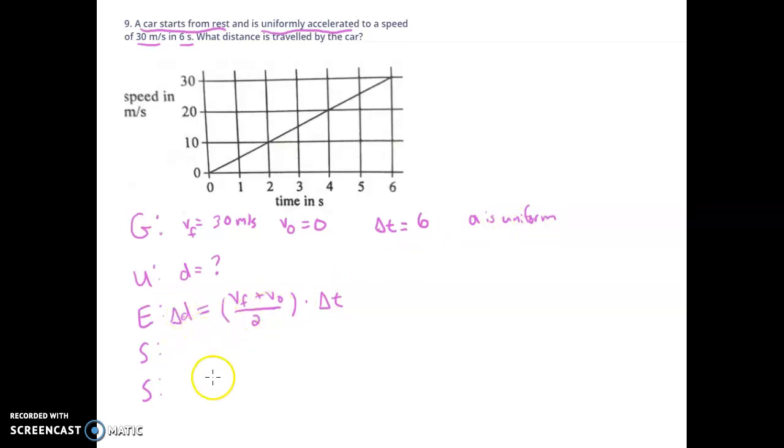And so when we substitute in, we're looking for D here, we plug this in, 30 plus 0 divided by 2 times 6. I'm realizing I forgot that's 6 seconds. And if I add, I can add units in here. So delta D equals, well, add 0, it doesn't do anything. 30 divided by 2 is 15 meters per second. And we're multiplying by 6 seconds. When we do that, the S's will cancel.